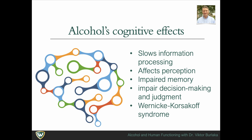Approximately 80–90% of alcoholics with Wernicke encephalopathy also develop Korsakoff's psychosis, which is a chronic and debilitating syndrome characterized by persistent learning and memory problems. Patients with Korsakoff's psychosis are forgetful and quickly frustrated and have difficulty with walking and coordination. They have problems remembering old information as well as learning new information—for example, they can talk about an event in their life but an hour later might not even remember having the conversation.